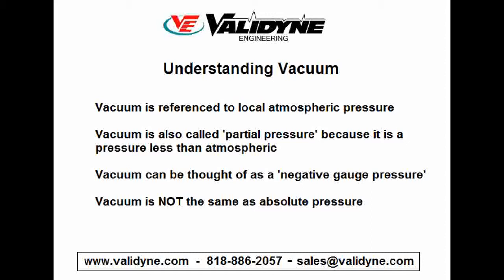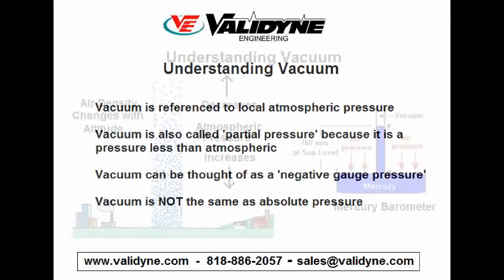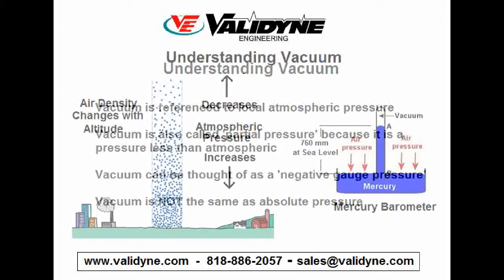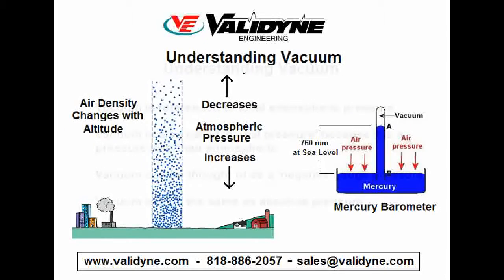The best way to understand vacuum is to understand atmospheric pressure. The Earth is blanketed with an atmosphere that consists mostly of nitrogen and oxygen. The atmosphere extends upward from the surface of the Earth some 50 kilometers. The atmosphere is held to the Earth by gravity, and the force of the air column on the surface of the Earth is what creates our atmospheric pressure. Because air is a gas, it compresses and becomes denser nearer the surface of the Earth, and less dense at altitude. Atmospheric pressure thus decreases with elevation.